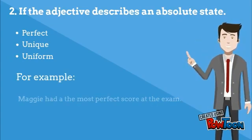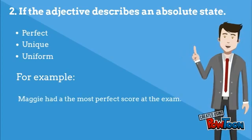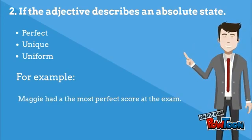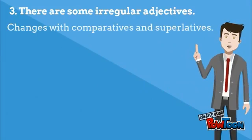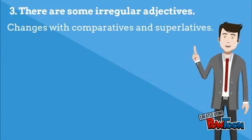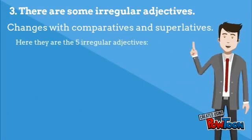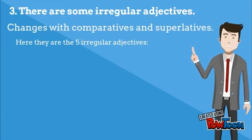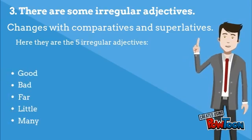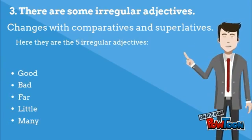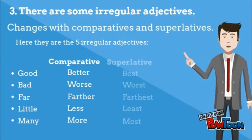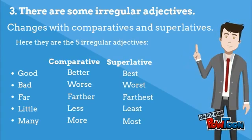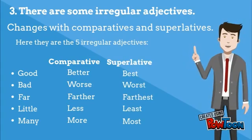For example: 'Maggie had the most perfect score at the exam.' And there are some irregular adjectives that change with comparatives and superlatives. There are five of them, which are: good, bad, far, little, and many. And here you have the comparative form and the superlative form.